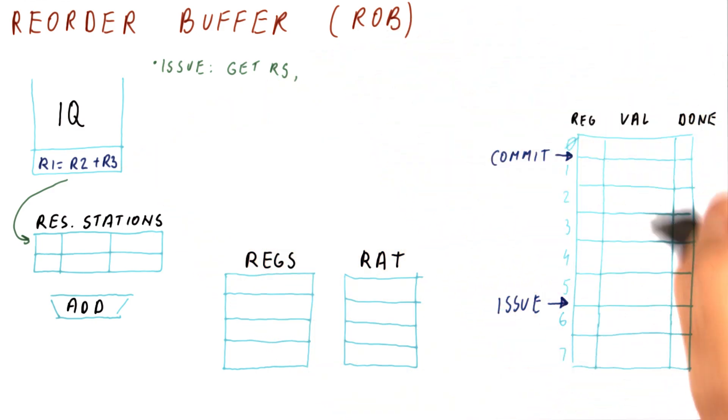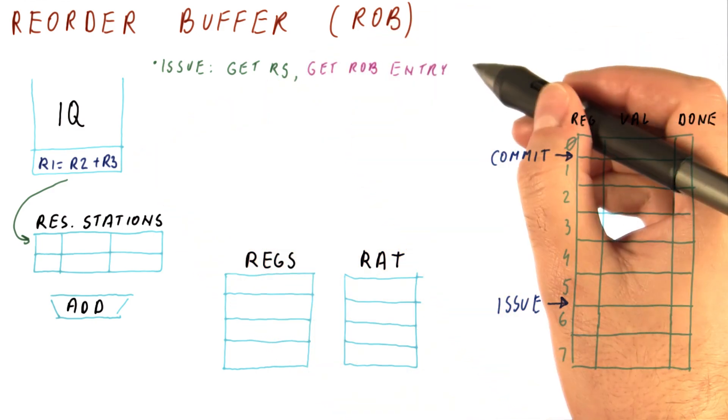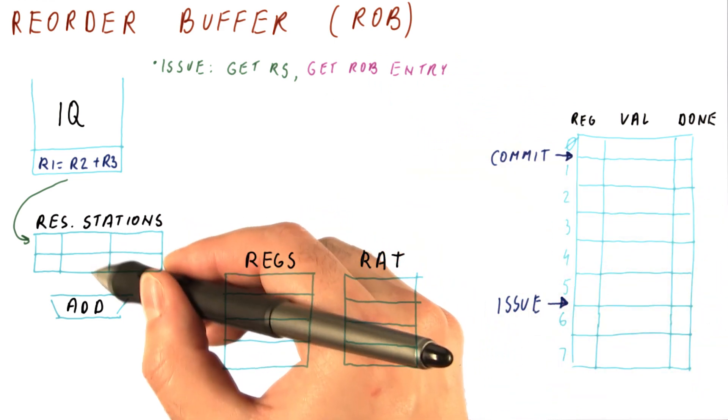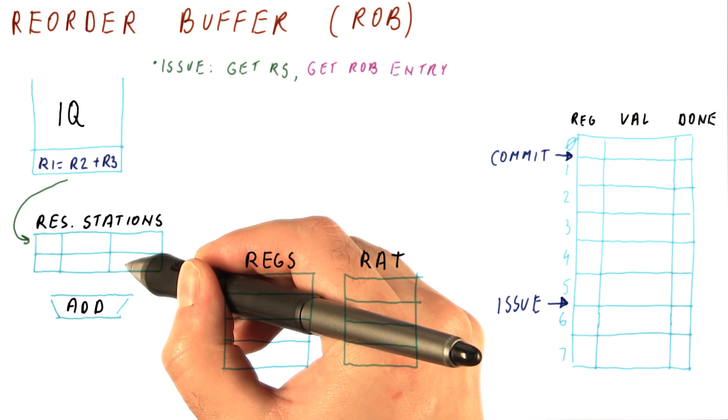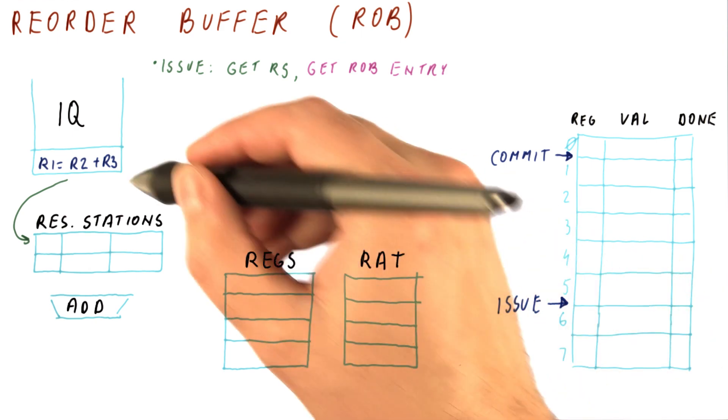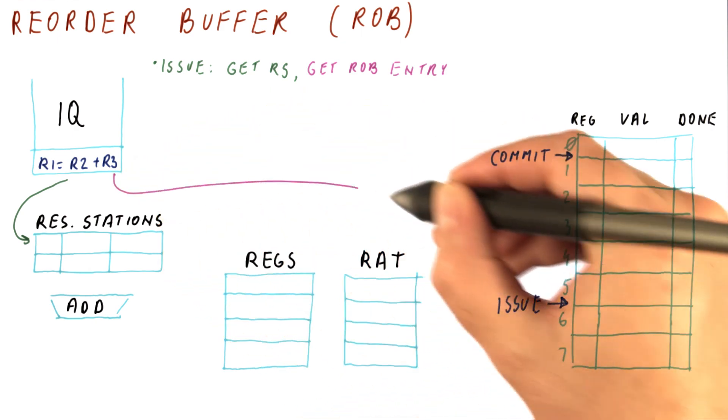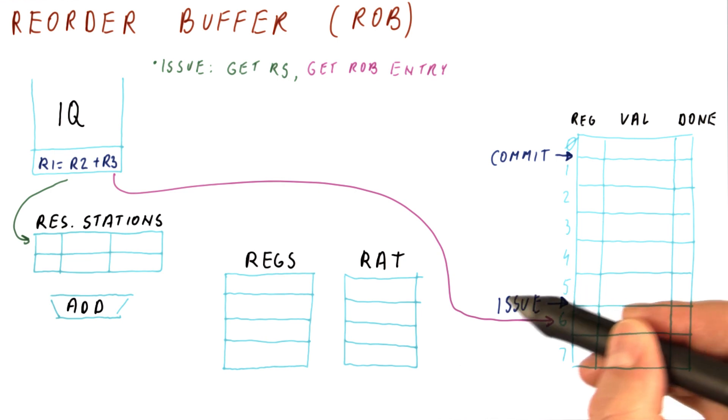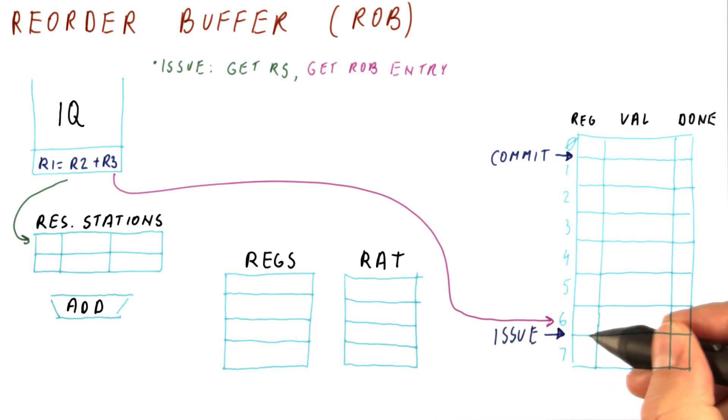Now that we do have a reorder buffer, we will also get one of those. Unlike reservation station where we just need a free one, it doesn't matter which one it is, here we need to get the entry that is the next one at the issue point. So our instruction will go here in the reorder buffer. That of course also means that our issue point will now move and points to the next entry in the reorder buffer.